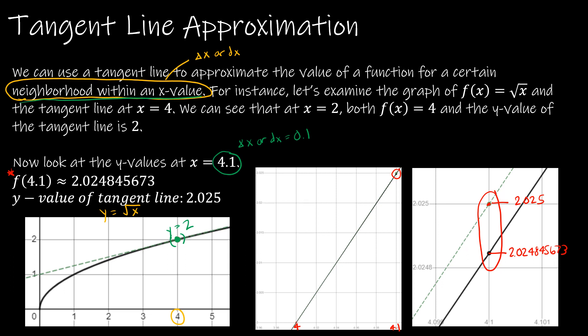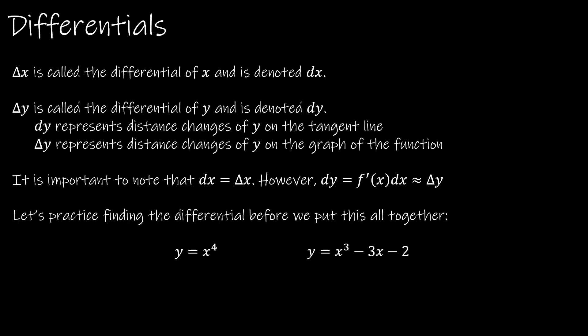We've established the idea behind what we're going to spend our time on — looking at differentials. Delta x is called the differential of x, or the change in x, and is denoted dx. Delta y is called the differential of y and is denoted dy. Delta x and dx are always going to be the same thing. We're always going to use the same change in x, and dy represents the distance changes of y on the tangent line.